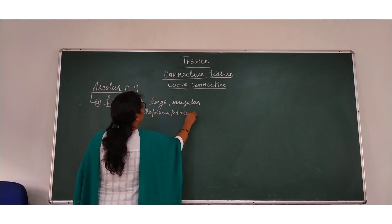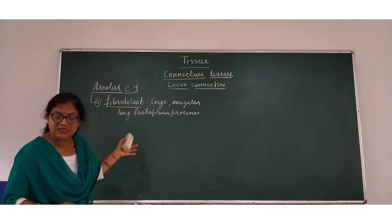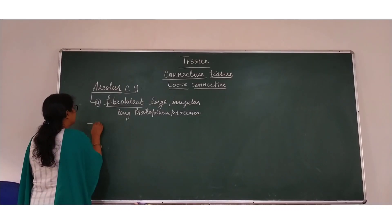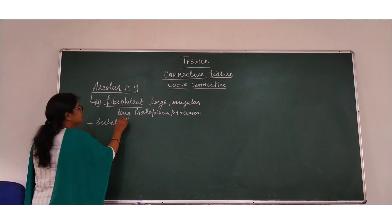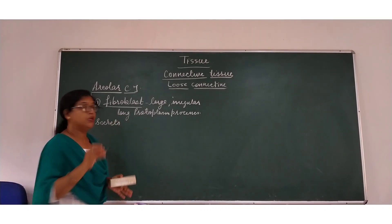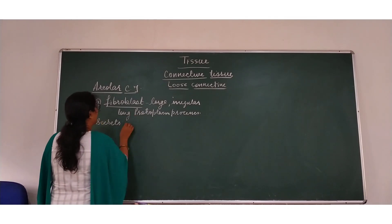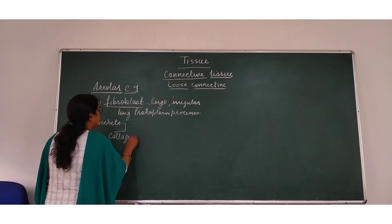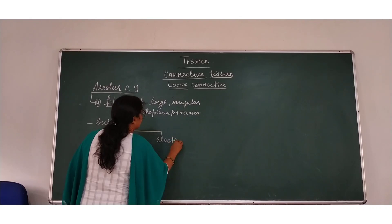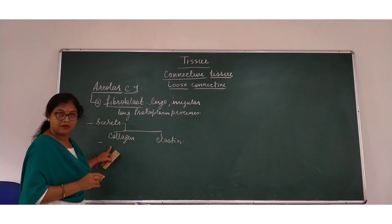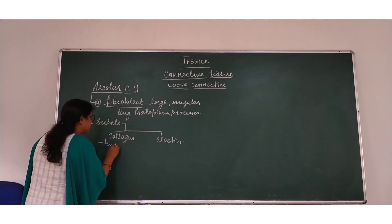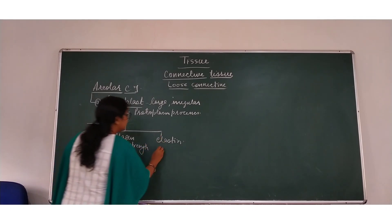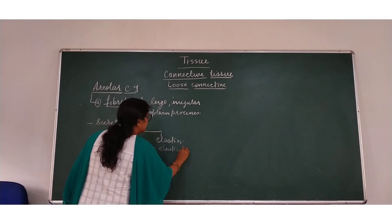The fibroblast secretes two types of protein. The first one is called collagen and the second one is called elastin. Collagen provides tensile strength, while elastin provides elasticity.